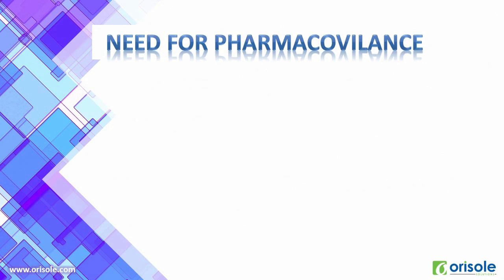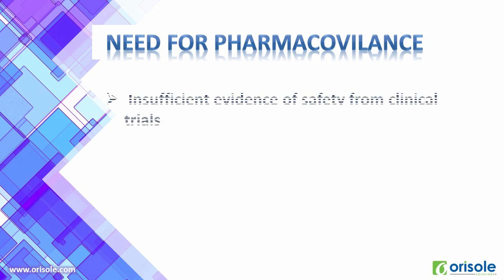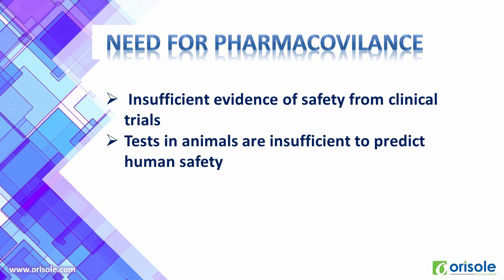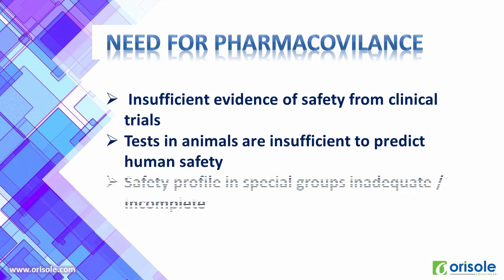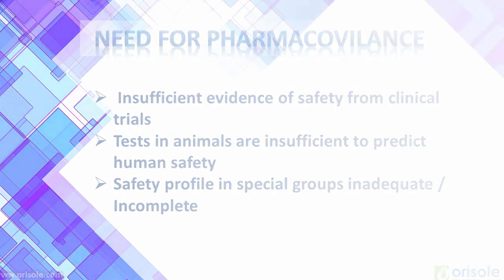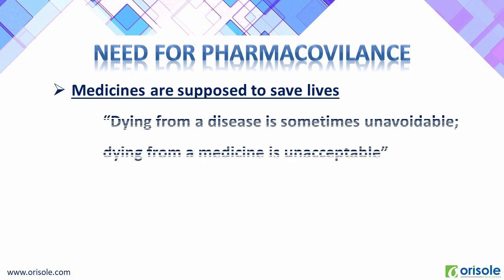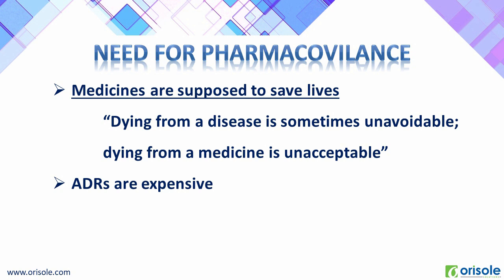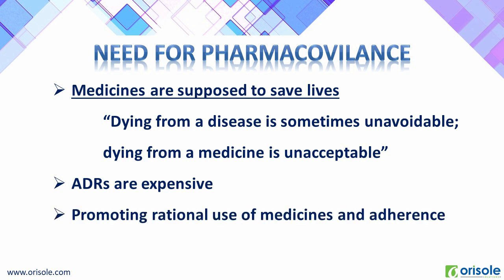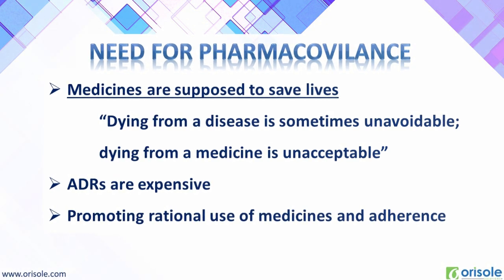What is the need of pharmacovigilance? The safety data from clinical trials is insufficient. The tests conducted in animals are insufficient to predict human safety. Safety profiles in special groups are inadequate or incomplete. Medicines are supposed to save lives — dying from a disease is sometimes unavoidable, but dying from a medicine is unacceptable. Though ADRs are expensive, they may be life-consuming or life-threatening. Pharmacovigilance is necessary for promoting rational use of medicines and adherence.